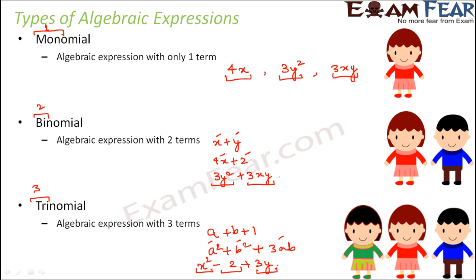So in this fashion, we have different types of algebraic expressions. But now this count cannot go on to infinity because you can have an expression with 20 terms, you can have an expression with 35 terms. So how long do we keep naming different expressions as monomial, binomial,